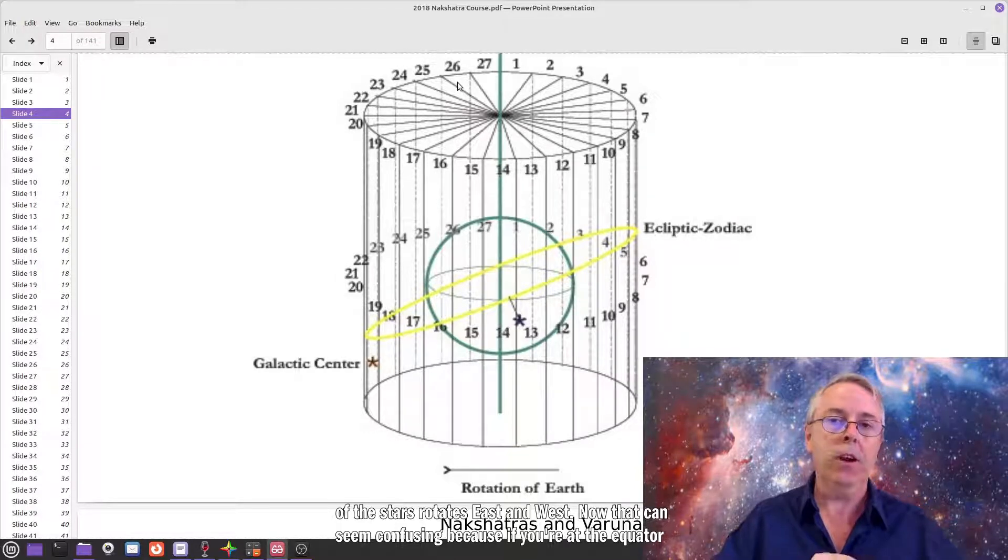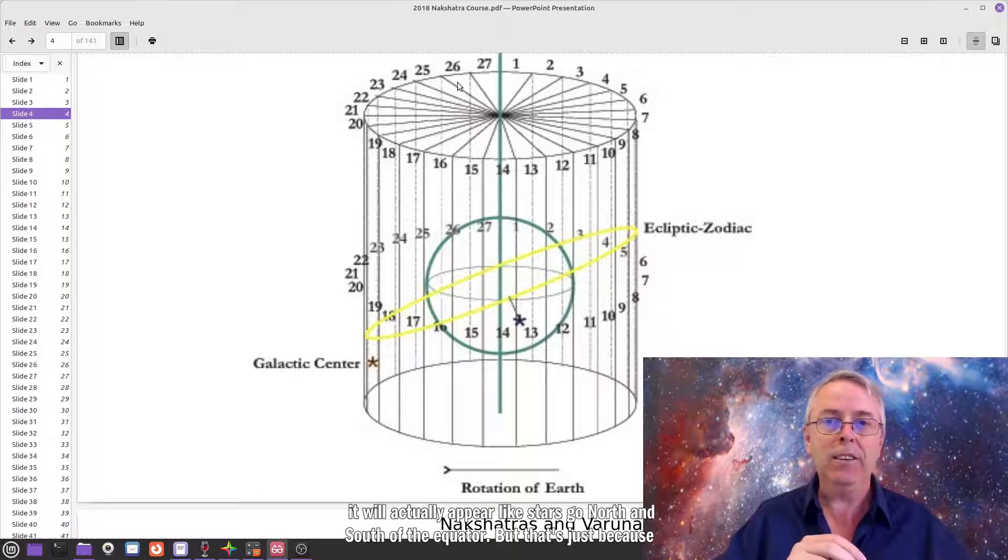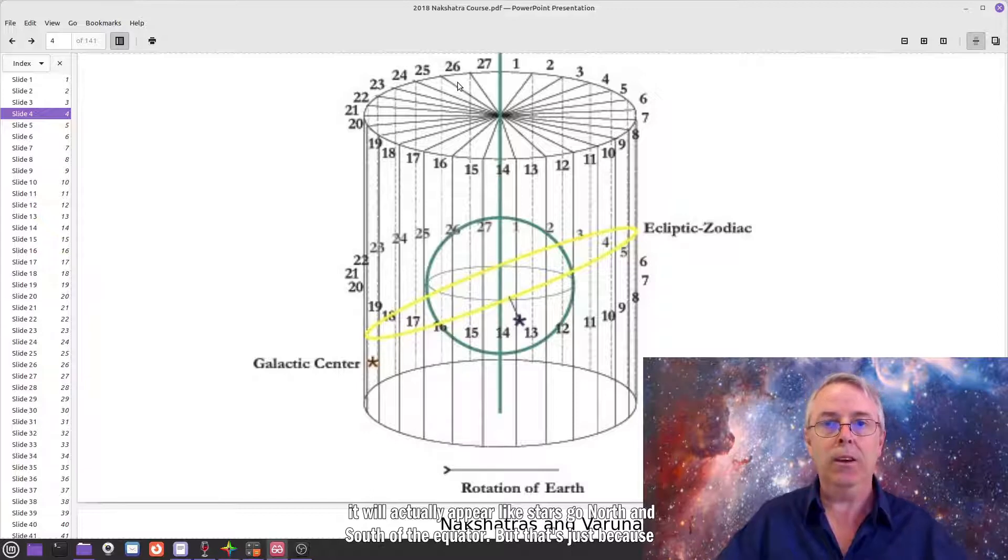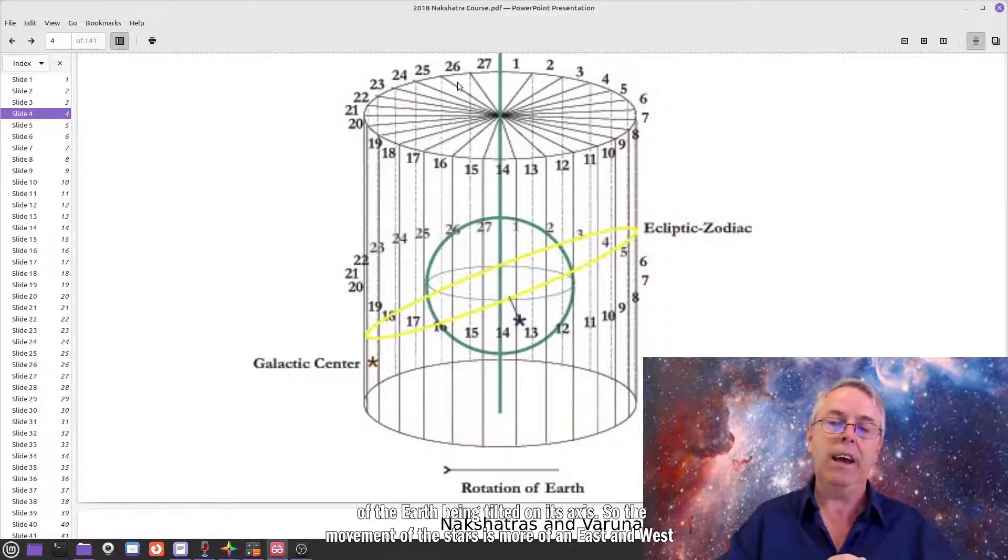Now, that can seem confusing, because if you're at the equator, it will actually appear like stars go north and south of the equator, but that's just because of the earth being tilted on its axis.